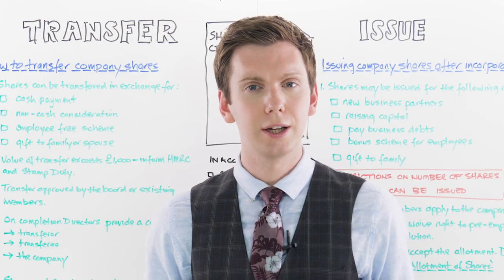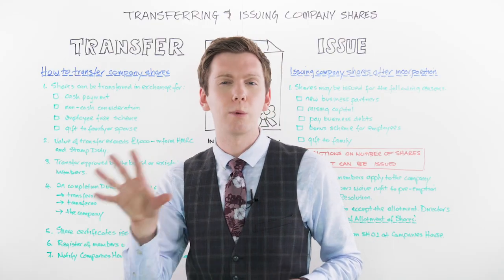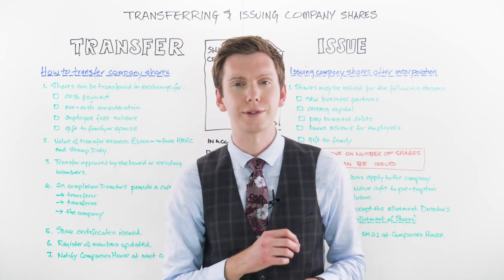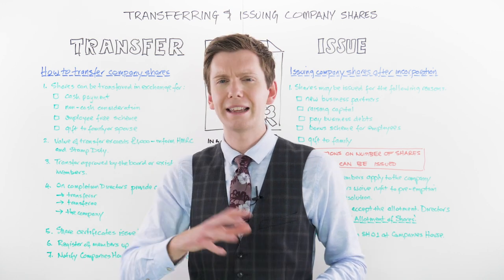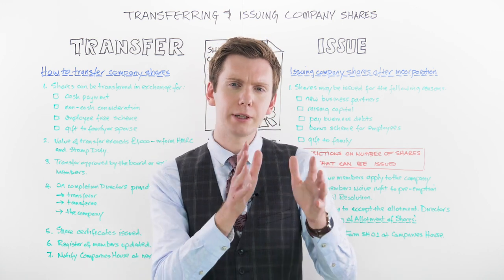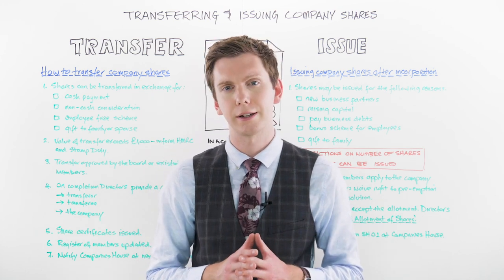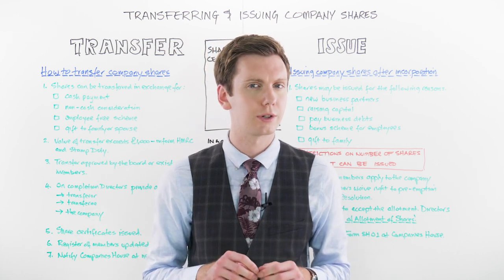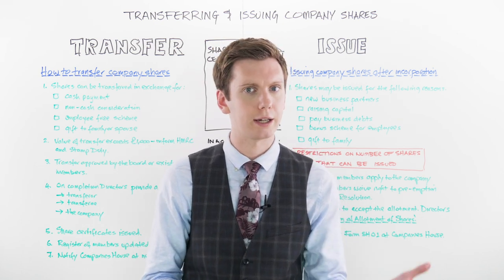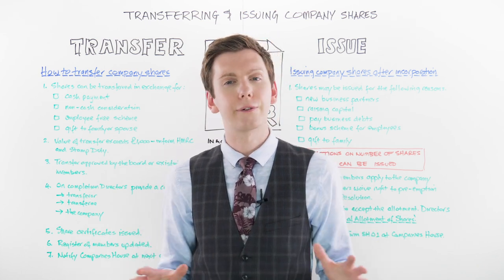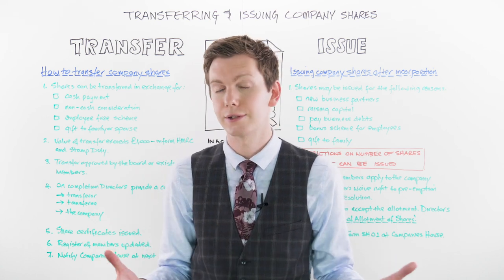Next, let's talk about authorised share capital. Authorised share capital is an optional provision that can be included in the Articles of Association. It essentially limits the number and value of issued shares that the company may have at any given moment. Companies formed before the 1st of October 2009 under the old Companies Act have this provision automatically included within their memorandum and articles. Companies incorporated under the 2006 Act — i.e. after the 1st of October 2009 — are free to forgo this provision entirely, though they can still include it within their articles if they wish.